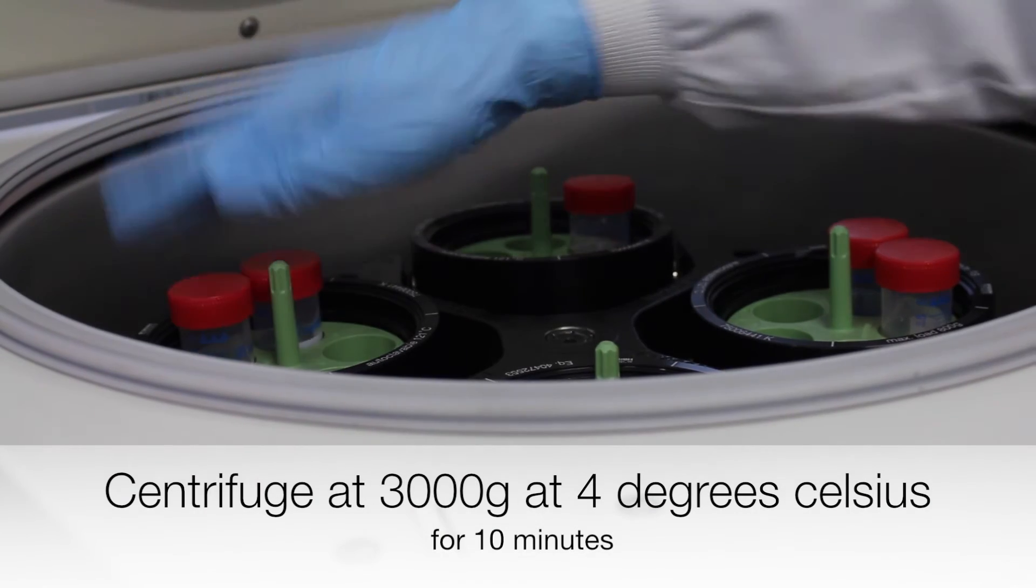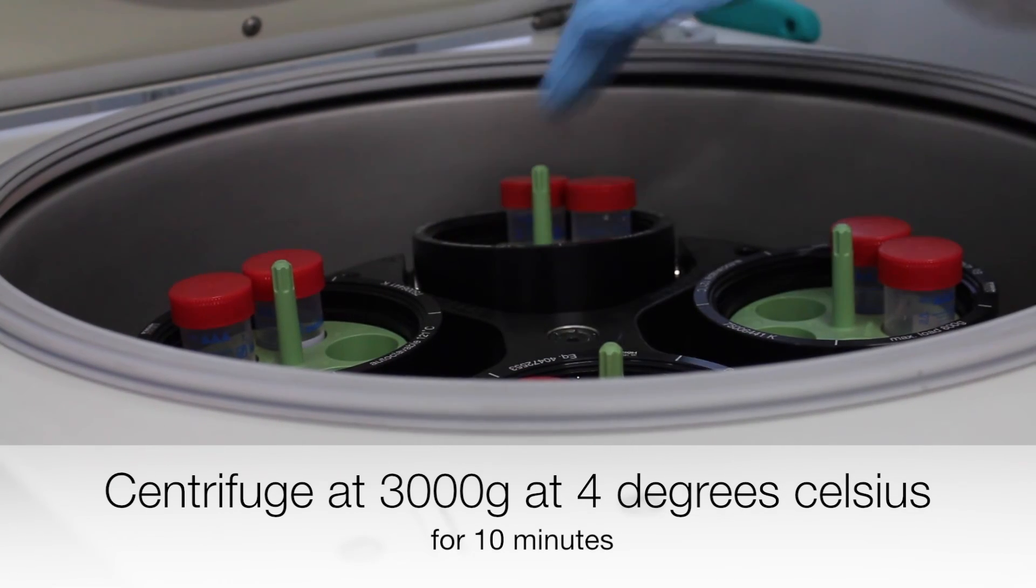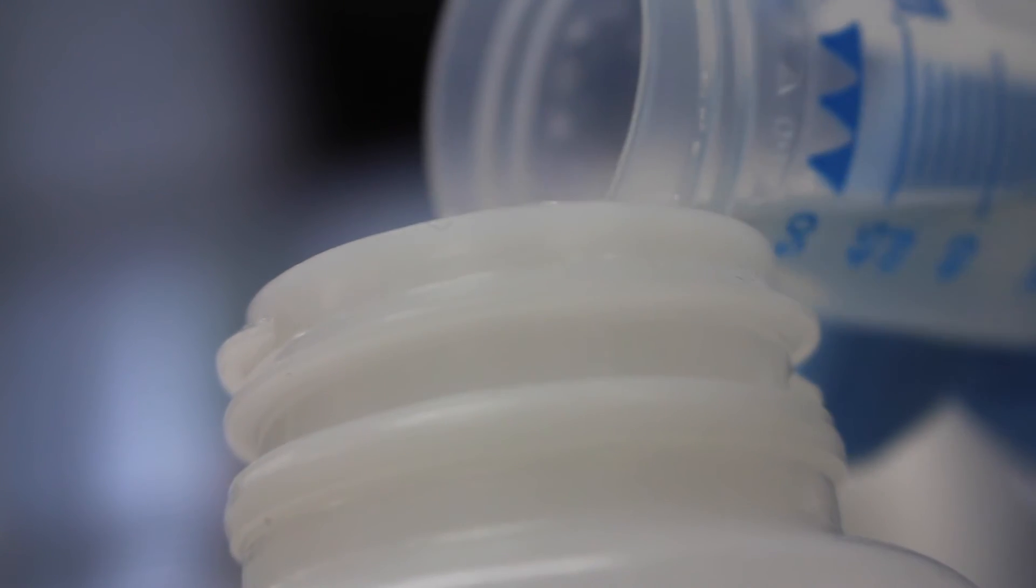As before, the tubes are centrifuged at 3000 g at 4 degrees Celsius for 10 minutes. The supernatant is disposed of carefully.